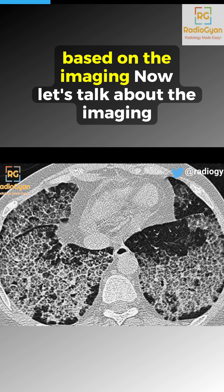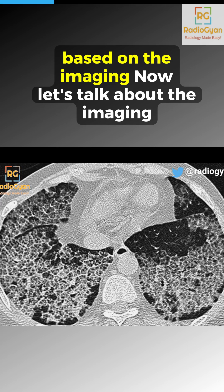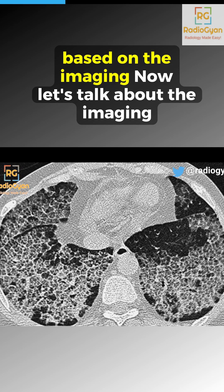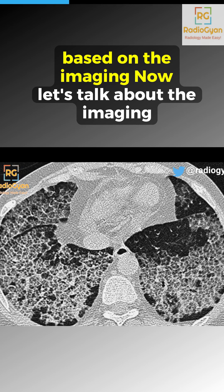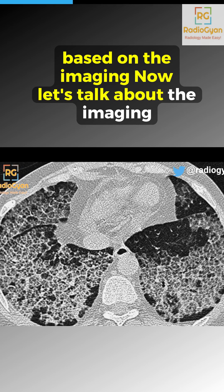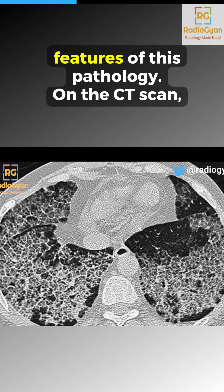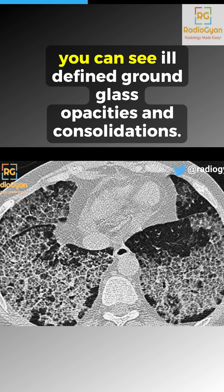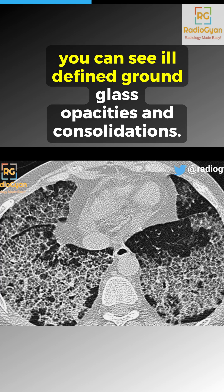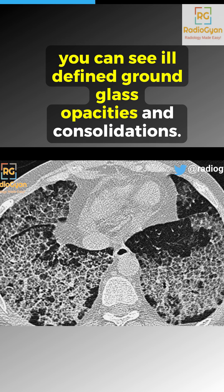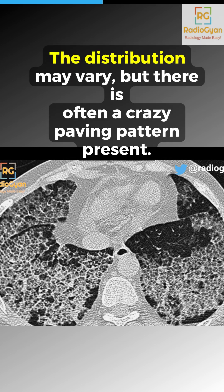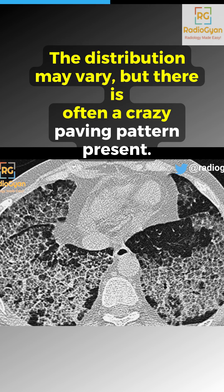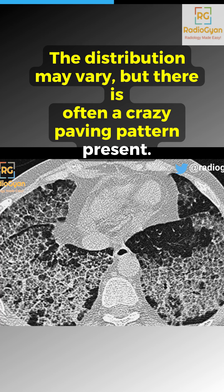Here's a hint: the CT scan shows a characteristic pattern called crazy paving. Now, let's talk about the imaging features of this pathology. On the CT scan, you can see ill-defined ground glass opacities and consolidations. The distribution may vary, but there is often a crazy paving pattern present.